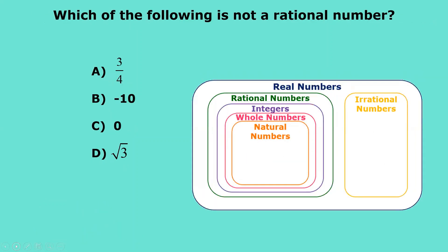Which of the following is not a rational number? Please pause this video and solve for which one is not a rational number. If you guessed D, you are correct — D is an irrational number.